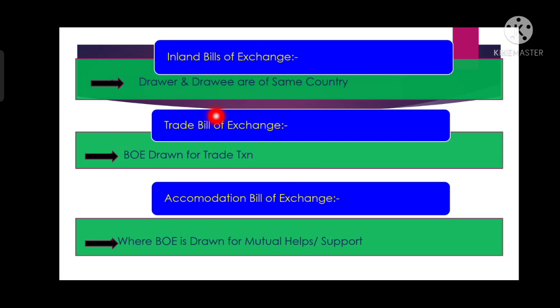The second type is the trade bill of exchange. Whenever a bill of exchange is drawn and accepted to settle a trade transaction, that is called a trade bill of exchange. In simple terms, when a bill of exchange is used to facilitate an international trade or domestic trade transaction, it is called a trade bill of exchange.